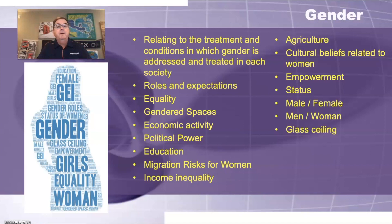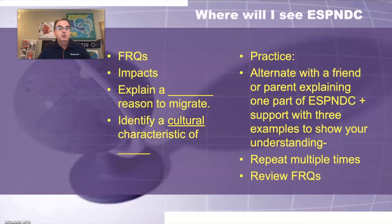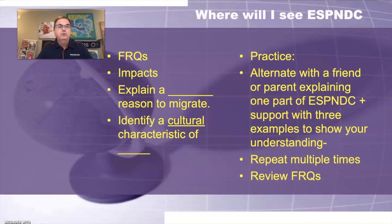Where will you see ESPN DC? You'll see them on the FRQs, on the impacts — explain a blank reason, an economic reason, a social reason, identify a cultural characteristic. Practice with some friends: alternate explaining one of the ESPN DC elements and support with three examples to show your understanding, and repeat this multiple times. Review FRQs — this will be on the test in some way or form. I've also got a Google doc attached below that you can use to test your understanding. I hope this has been helpful — have a great day and see you next time.